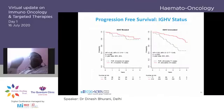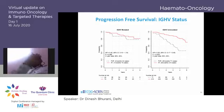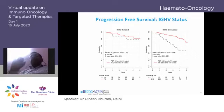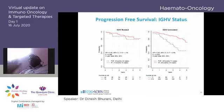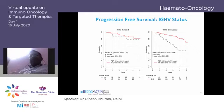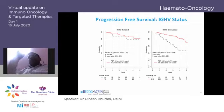If you look at IGHV mutation status: for IGHV-unmutated patients without 17p deletion or p53 mutation who are young, we use ibrutinib — especially if the patient can afford it and is willing to take long-term oral medication. For IGHV-mutated young fit patients, because of the flattened survival curve, I still prefer FCR, as there is not much difference between FCR and ibrutinib in this group.